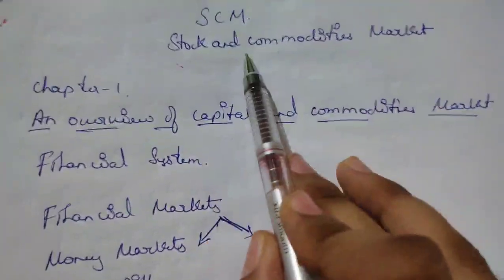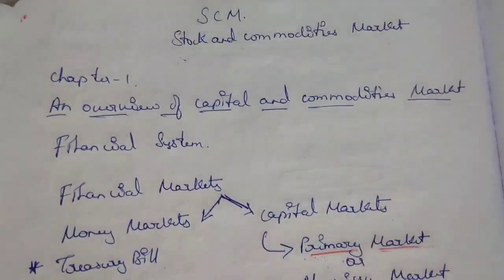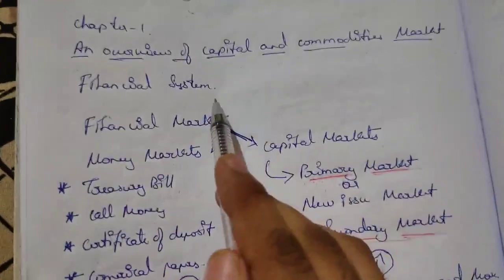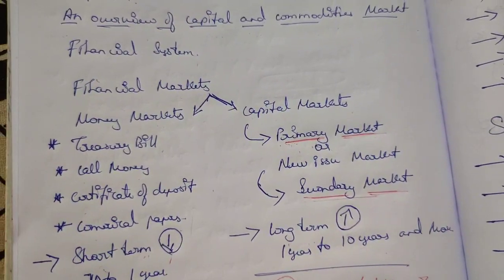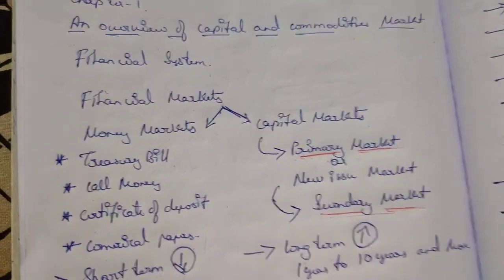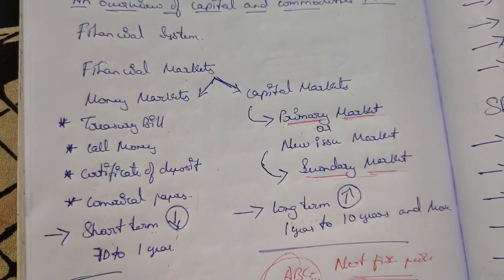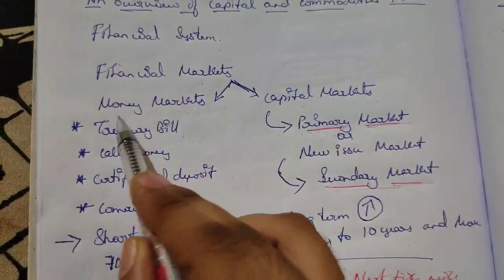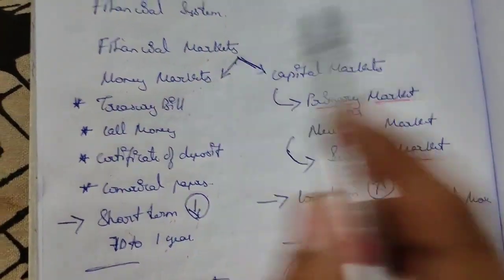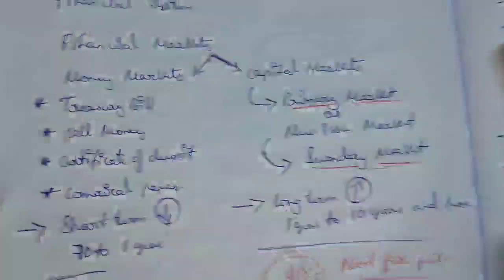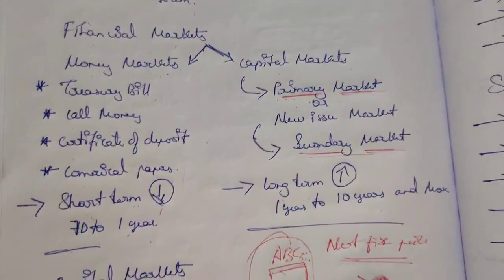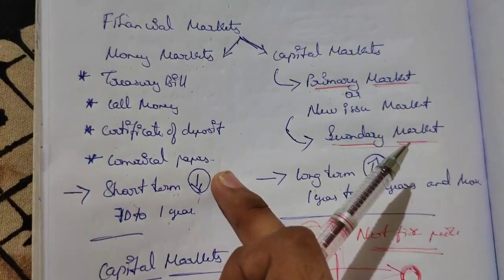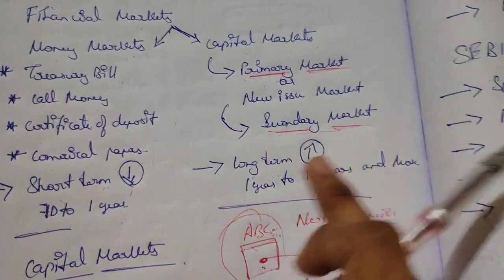Let's have a quick recap. Stock and Commodity Market: Chapter one is an overview of capital and commodity markets. Financial system is a physical institution that deals with exchange of funds between lenders, borrowers, and investors. Financial markets help gain capital to run a business. Money market is for smaller, short-term funds; capital market is for larger, long-term investments. Money market instruments include treasury bills, call money, certificates of deposit, and commercial papers — all before one year.